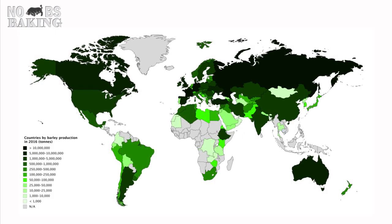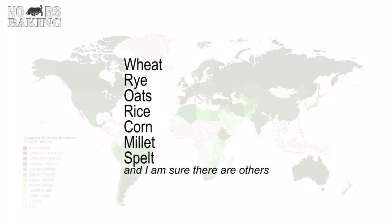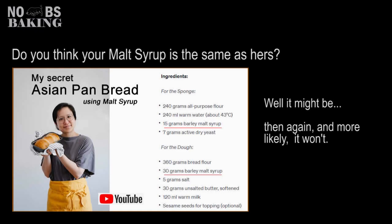Barley is grown around the world and processed into malt products in many countries. Barley is the most commonly malted grain in part because of its high content of enzymes, although wheat, rye, oats, rice, corn, millet, and even some ancient grains like spelt are also used to create malt products. Keep in mind the range of amylase in a typical malt powder and syrup can vary based on the type of barley used, the geographic location it was grown, and the malting conditions during the production process.